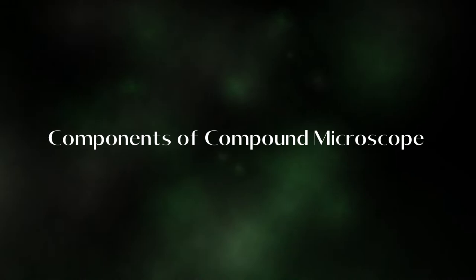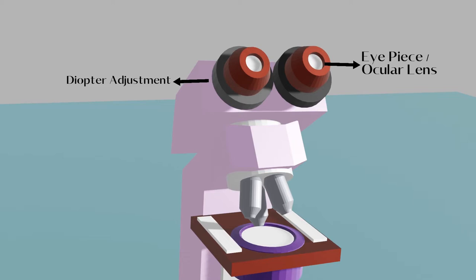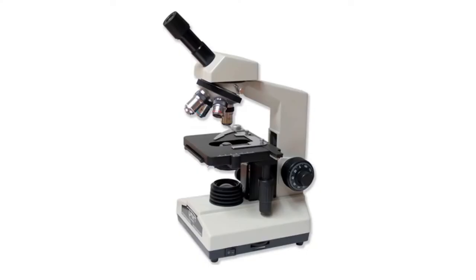Let's learn about the components of the compound microscope. The first component is the eyepiece and body tube. The eyepiece is the lens through which the viewer looks to see the specimen. It usually contains a 10 times or 15 times power lens. The body tube connects the eyepiece to the objective lenses.